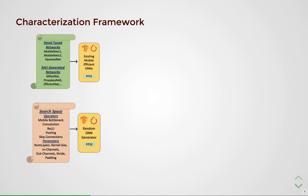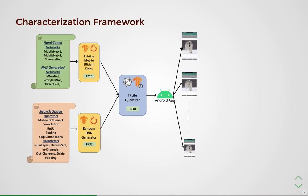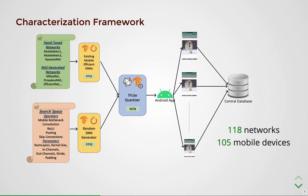The random DNN generator spans across a wide variety of operators like mobile bottleneck convolutions with varying parameters such as kernel size, stride, and padding. To characterize the latency of these networks on a wide range of mobile devices, we designed an Android app and crowdsourced the latency measurements. The networks were quantized to 8-bit integers using TensorFlow Lite's post-training quantizer. The Android app runs each network 30 times on the mobile CPU, aggregates all latencies, and sends them to a central database. This framework gathered latencies of 180 networks on 105 hardware platforms, forming our training dataset.